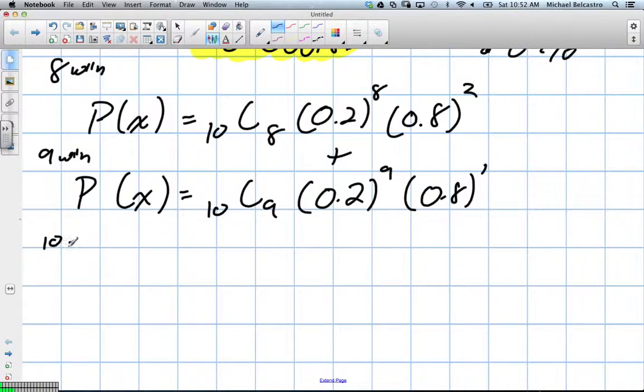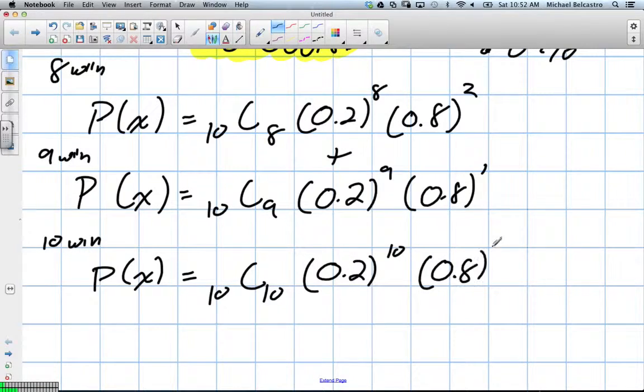And finally, the idea of 10 wins. So winning every single time, what's our probability? It'll be extremely rare. It'll be 10C10, 0.2 to the power of 10, and 0.8 to the 0. So we have to add all of these probabilities together. Now, with a good calculator, we can do this all in one shot.